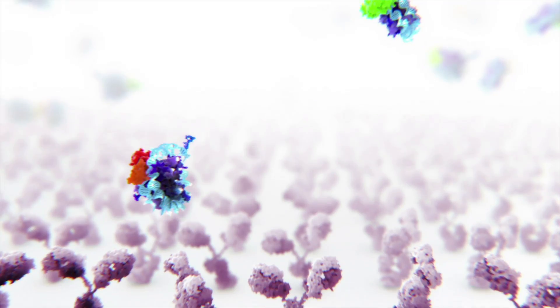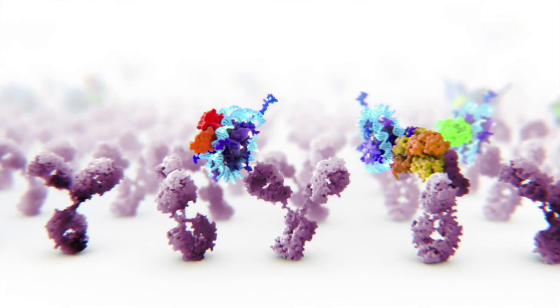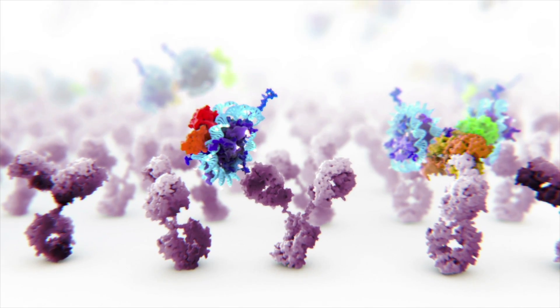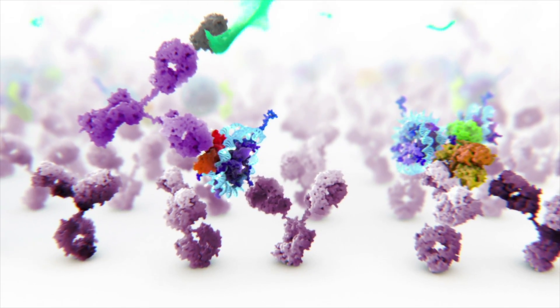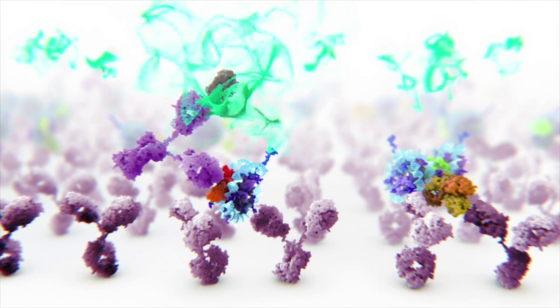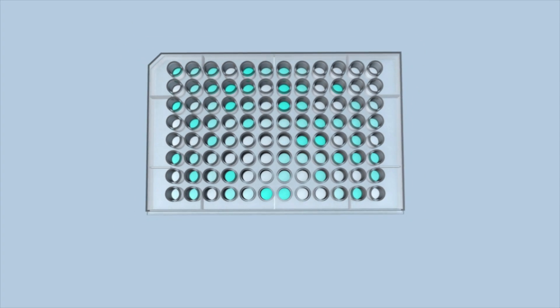First, the sample is added to a well plate coated with antibodies that capture the nucleosomes. Then labeled antibodies are added to the well. These generate a colored signal if epigenetic alterations are present. The more intense the color, the more detections.